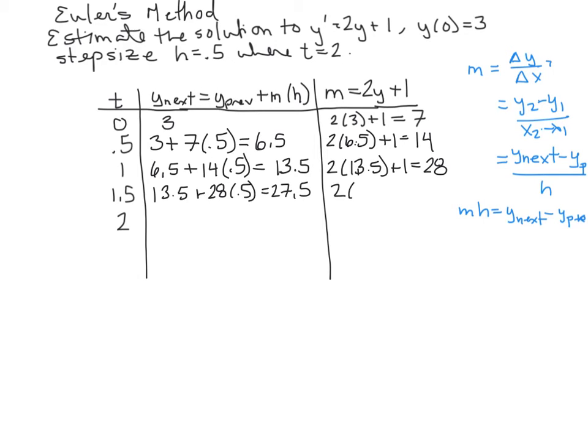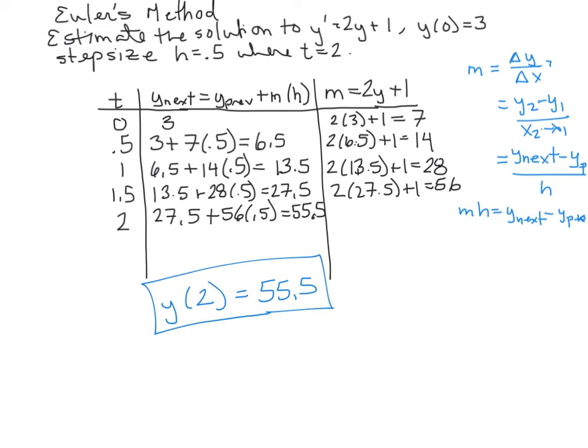The next slope, 2 times, I'm going faster here because this is a little tedious. We get 56, so 27.5 plus 56 times .5 is equal to, and we get 55.5. So the answer to this question, if I'm going to estimate the solution, remember that all solutions are y values. So basically this right here is our solution column, and we want the solution where t is equal to 2. So the solution to this, y at 2, is going to be 55.5.